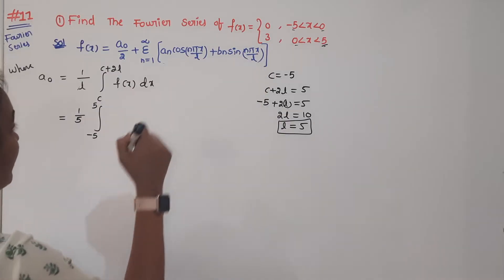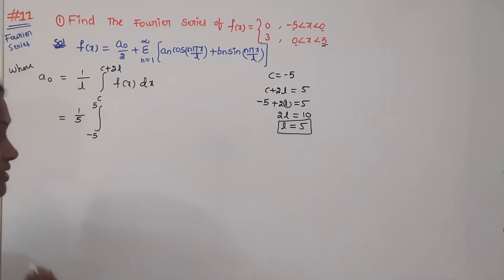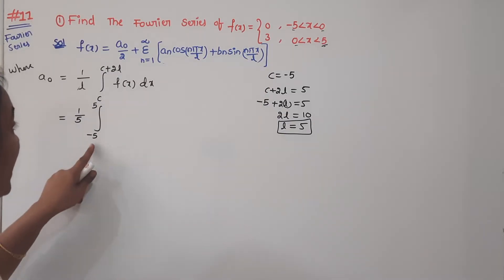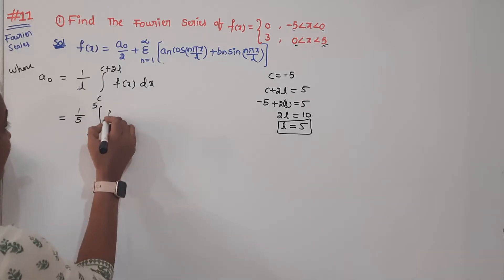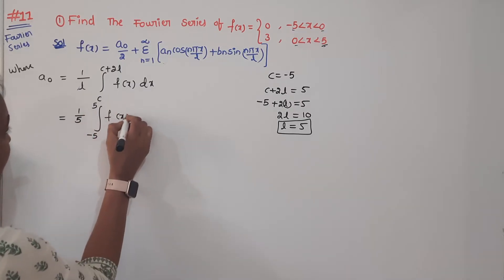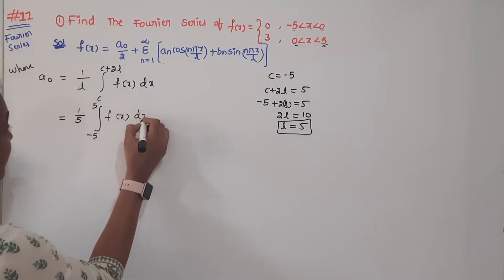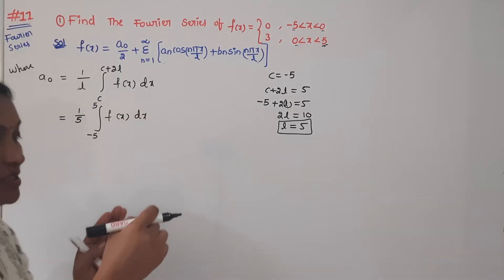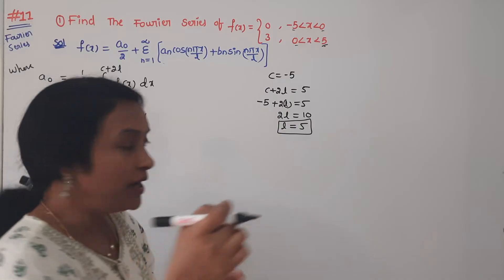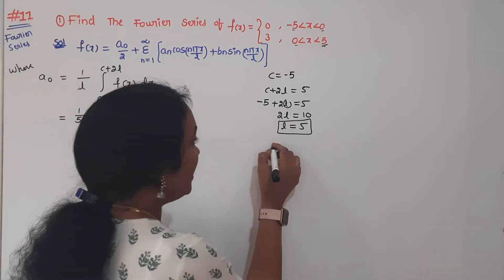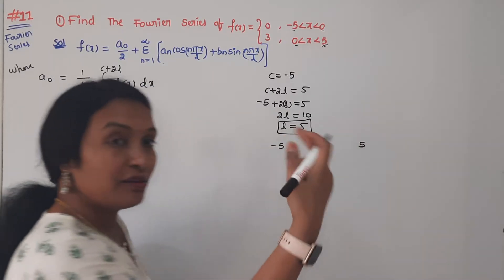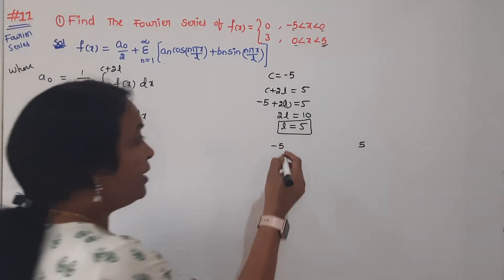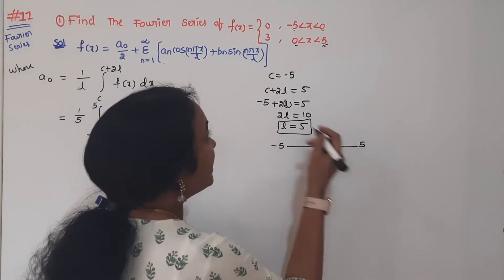We have two sub-intervals dividing the function, and we consider both. What are the limits? L is 5, C is minus 5, C plus 2L is 5. So F(x) dx from minus 5 to 5. We have to say what F(x) is. We have two intervals — we must consider both: minus 5 to 0, and 0 to 5.